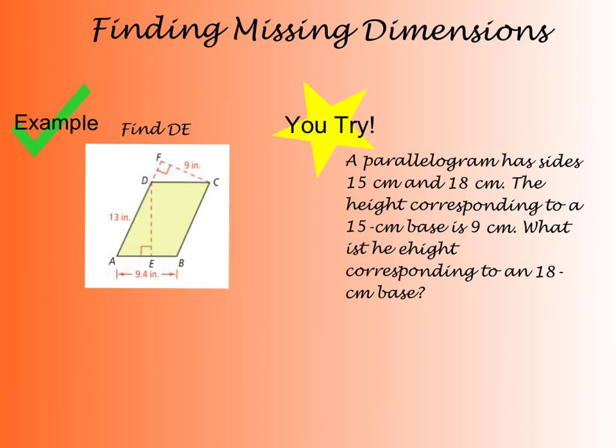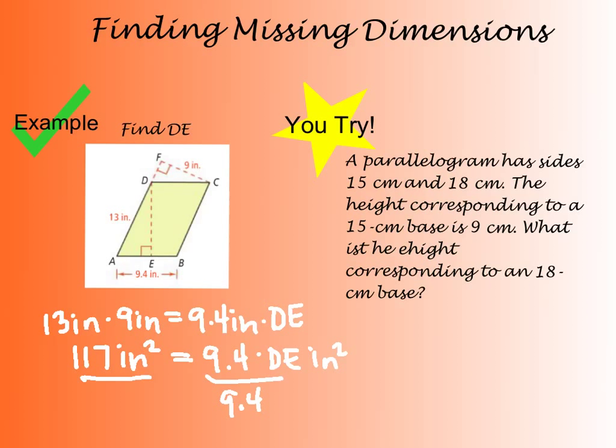So my area, if I use those two segments, is going to be base of 13 inches times my height of 9 inches. But I know that that's going to be equal to my area if I calculate it with AB being my base and DE being my height. So that must be equal to 9.4 inches times DE. So I multiply my 13 times 9, and I get 117 squared inches. That has to be equal to 9.4 times DE inches squared. So I'm going to divide that 9.4 to the other side so I can get my DE by itself. And when I do that, I get DE is equal to 12.45 inches.